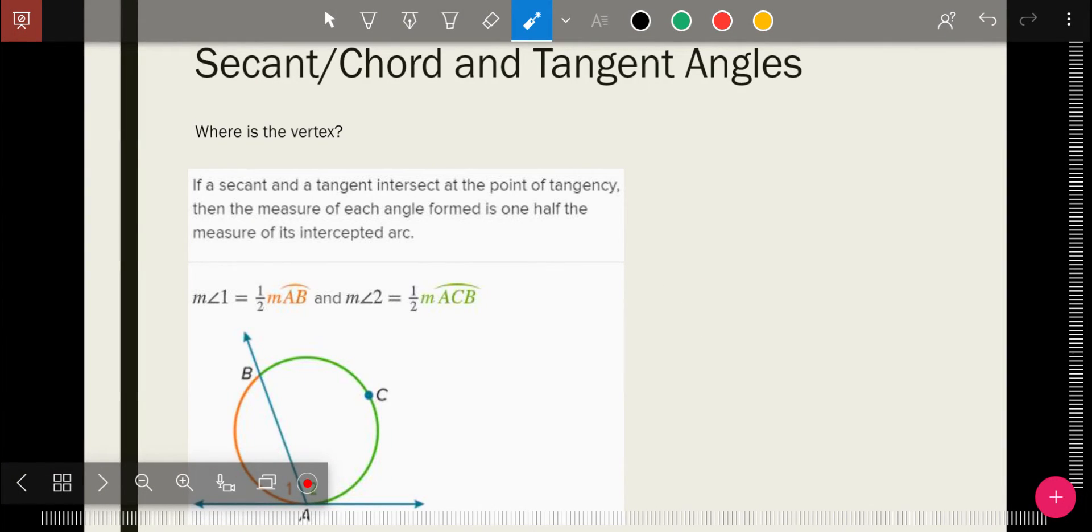Make sure you have that note done. Now we're going to look at secant or chord, this is a secant here, and a tangent when they meet. And again, the big deal here is where is the vertex? The vertex here is on the circle. We have already had some like that. It's the same rule as inscribed.